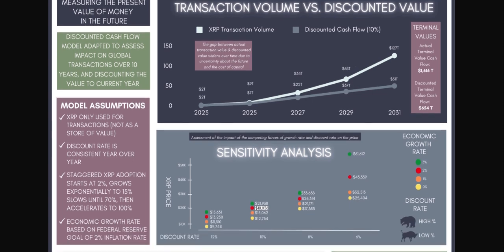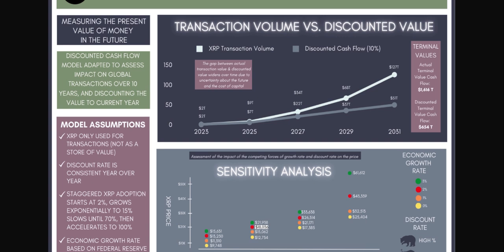A couple more things about how this model works: we use what's called a discount rate, which is key to DCF modeling. The discount rate is a measure of risk and the cost of capital being deployed elsewhere. If you were valuing a business — where this methodology is very commonly used — and looking at projected cash flows for future years, you could be pretty confident about this year, somewhat confident about next year, but as you go further into the future there's a lot of uncertainty. So the effect of the discount rate becomes larger the further out you go, penalizing long-term projections that carry greater uncertainty.